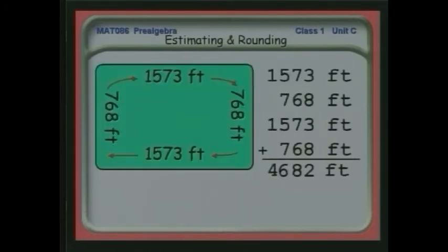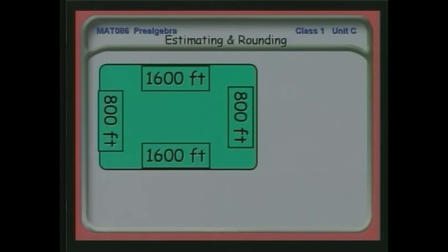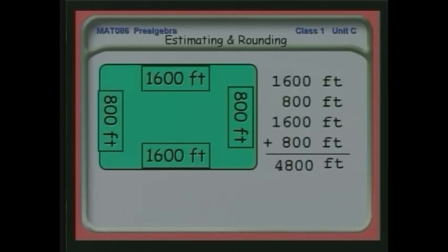Here is our original problem where we get 4,682 feet, but that's hard to do in your head. Let's round all of those distances to the nearest hundred. Now isn't that easier to add? We get 4,800 feet total, and it's pretty close to the 4,682 we got before, but this let us come to an estimate a little bit faster. So this is the process of estimating, which involves rounding, then doing the math.